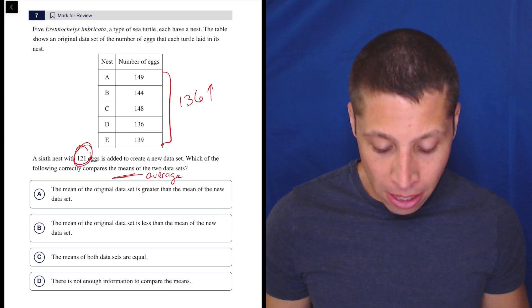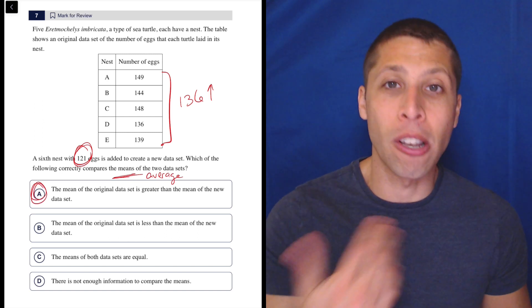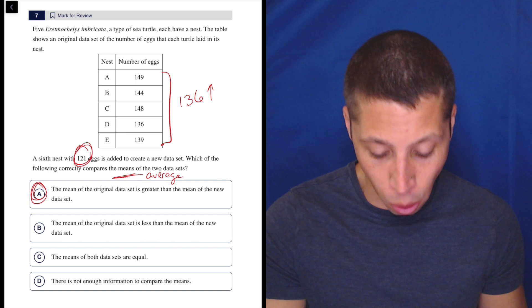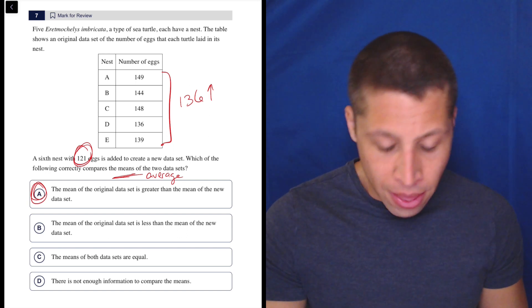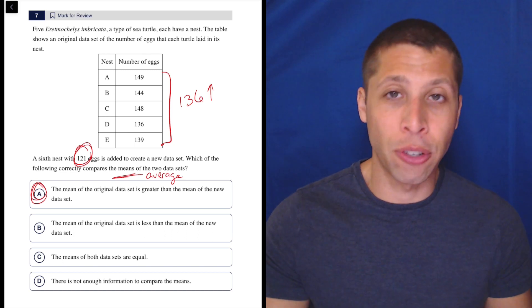So that is what is happening here. And so if we look at the answer choices, what's going to happen? The mean of the original data set is greater than the mean of the new data set. Yes, because the new data set is going to be pulled down by this 121 here, this lower number. This is, like I said, a five second question if you understand how these averages work.